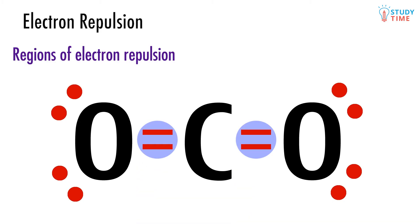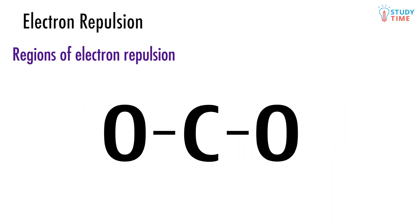Therefore, in order for those two regions of electron repulsion to be as far away from each other as possible, the bond angle here has to be 180 degrees. The molecule looks like this.